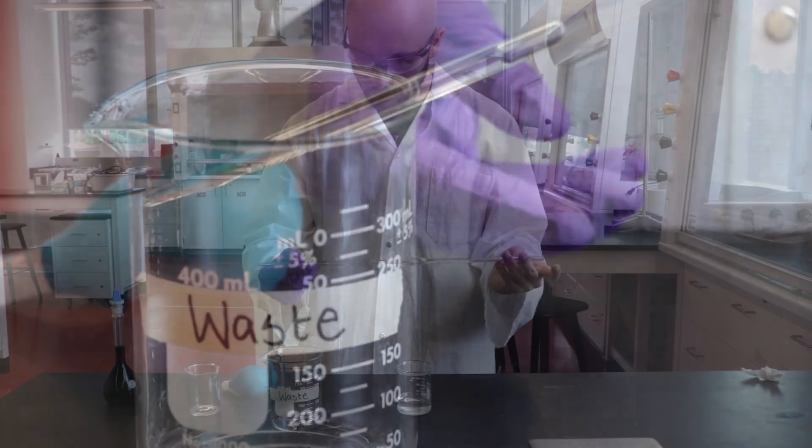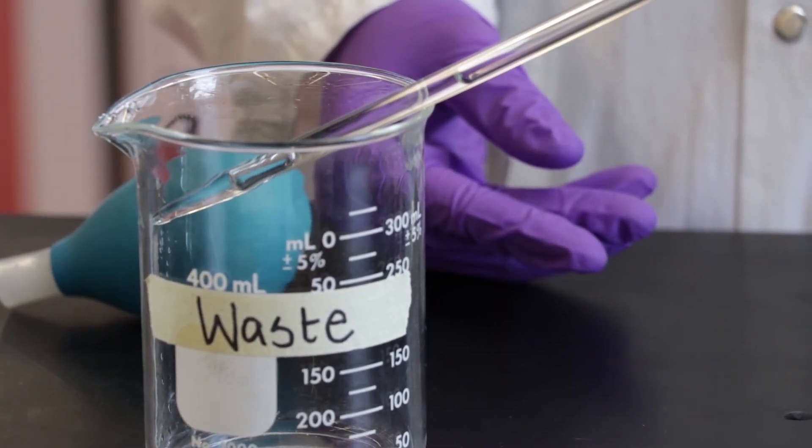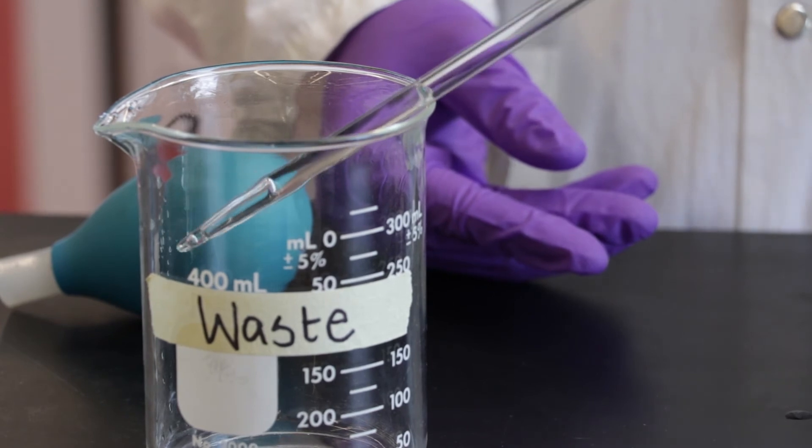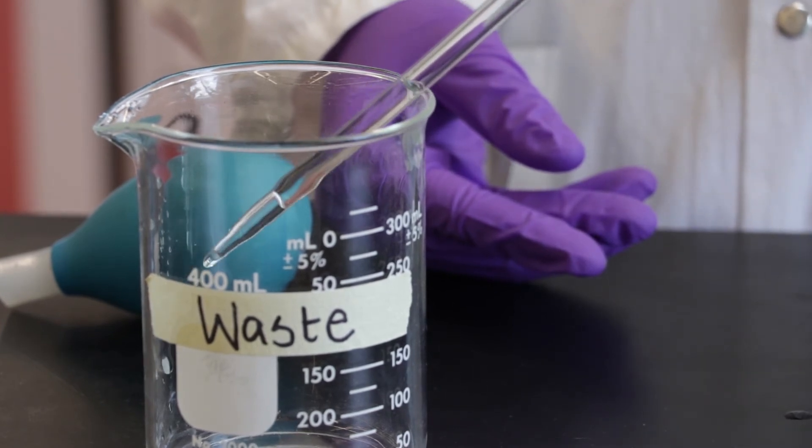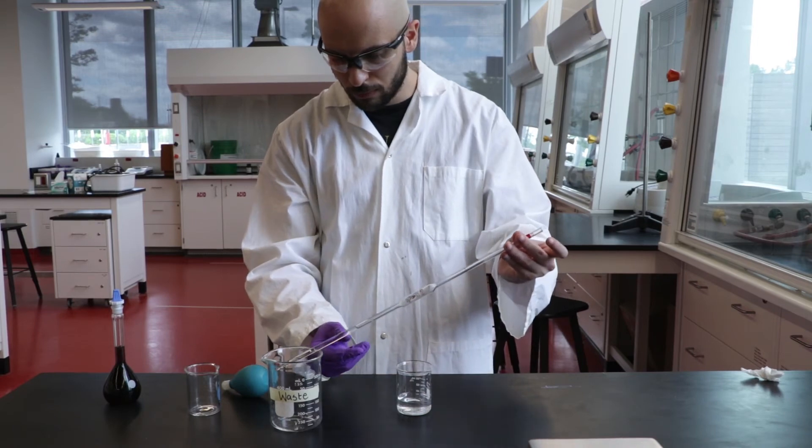If you notice that the discarded rinse is colored then further rinsing is needed. Rinse the pipette two more times. The rinse should become progressively more colorless until it is identical to water. This indicates that you have successfully rinsed the pipette.